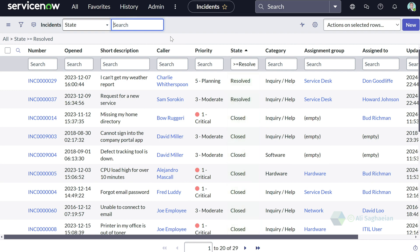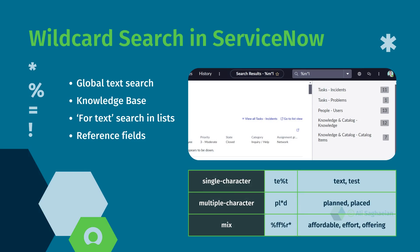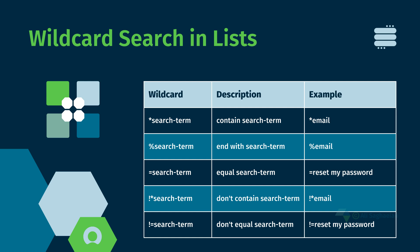You can get the most out of your searches with the power of wildcards. Wildcards allow you to match variations and patterns in your search terms, expanding your results beyond exact matches. You can use wildcard characters in your global text search, knowledge bases, searchable lists, and reference fields. ServiceNow supports several wildcard characters to expand and refine your search results.